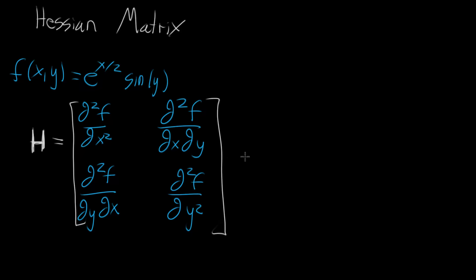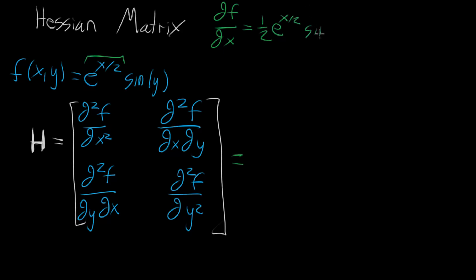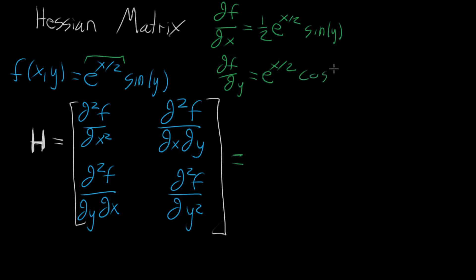Let's go ahead and compute this for our specific function. To get all the second partial derivatives, we first keep a record of the first partial derivatives. The partial derivative of f with respect to x: x only appears in e to the x halves, so we bring down the one half — giving one half times e to the x halves times sine of y. The partial derivative with respect to y: e to the x halves looks like a constant, and the derivative of sine of y is cosine of y, giving e to the x halves times cosine of y.